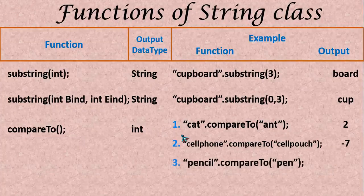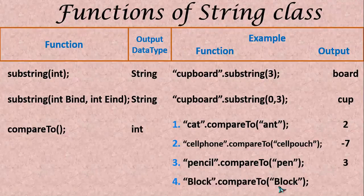Minus 7 and then here I am comparing pencil and pen we have already seen. It is 3 and then here block and block. Both are same it is going to be 0.